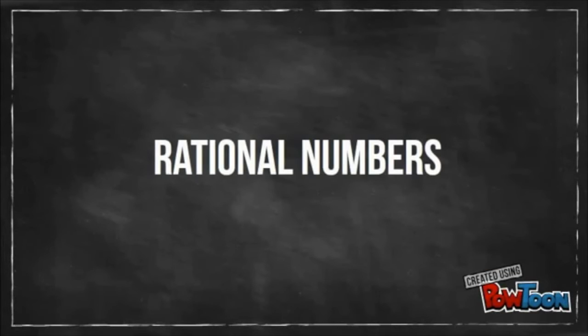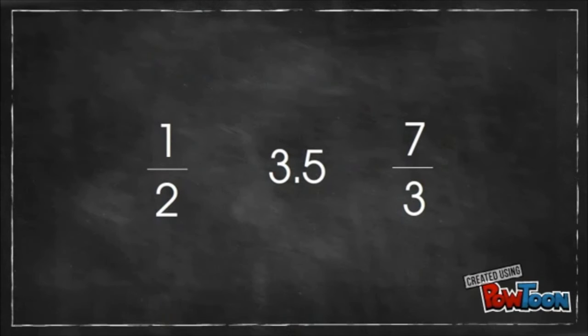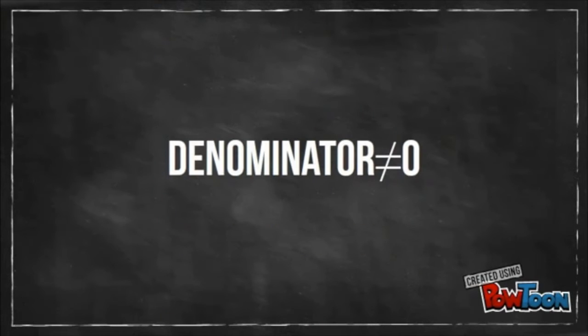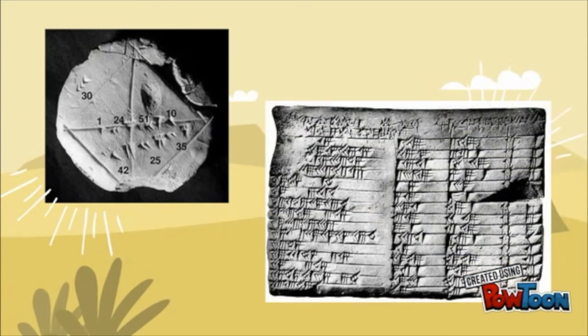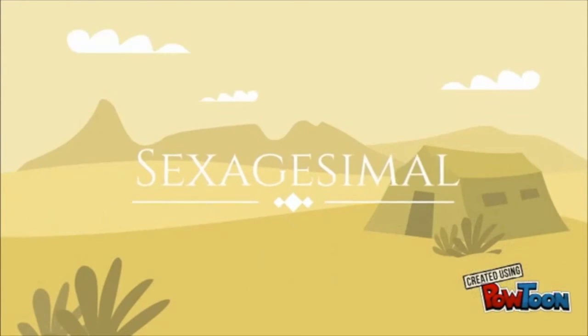Rational numbers are numbers that can be written as a fraction, where the denominator cannot equal zero. 4,000 years ago, the Babylonians were using fractions. They extended their natural number system to a sexagesimal system to include fractions.